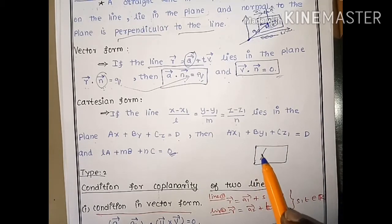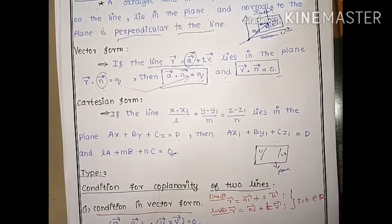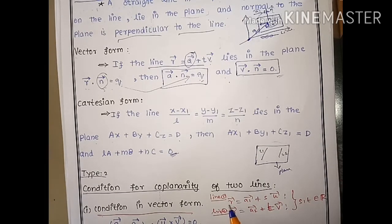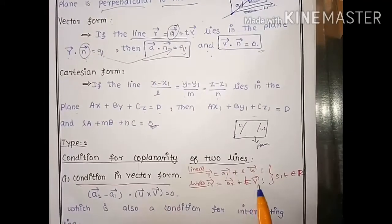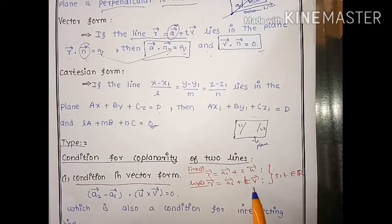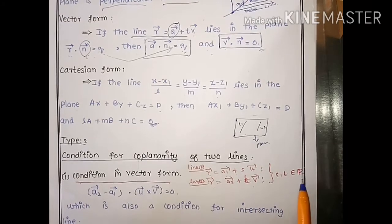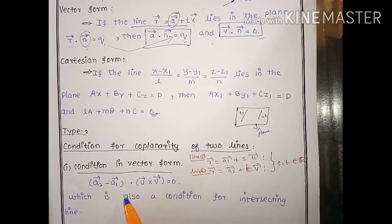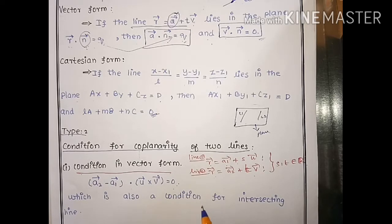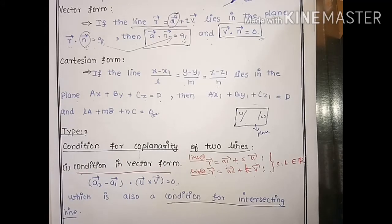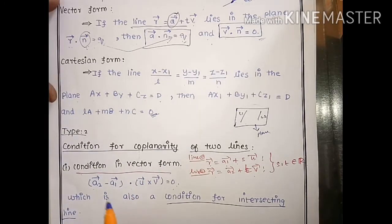Conditions of coplanarity of two lines — Type 2. Two coplanar lines lie in the same plane. The condition for coplanarity (or intersecting lines) is: (a2 − a1) · (b1 × b2) = 0. This is the coplanarity formula, also called the condition for intersecting lines formula, where a1 and a2 are position vectors of points on the two lines.